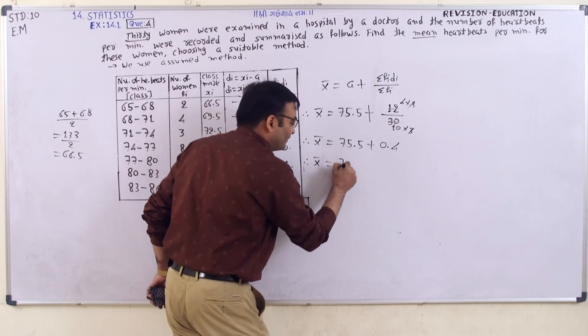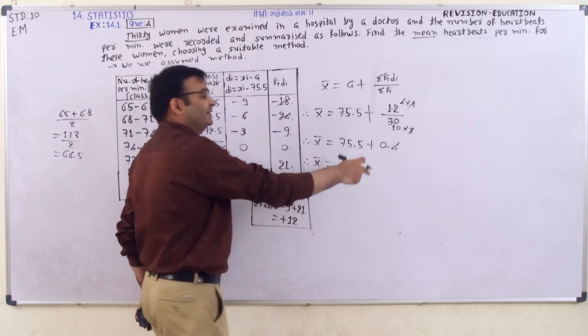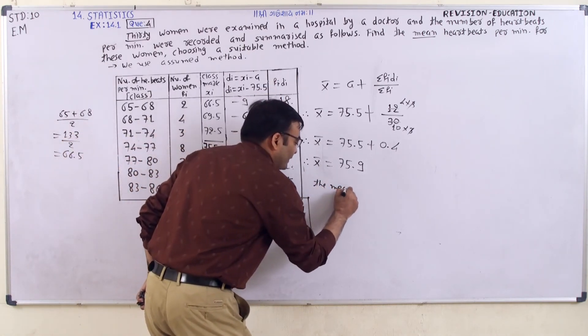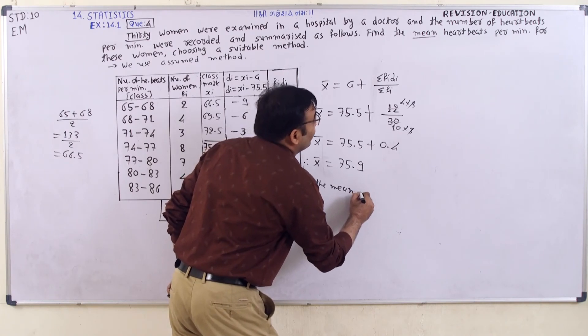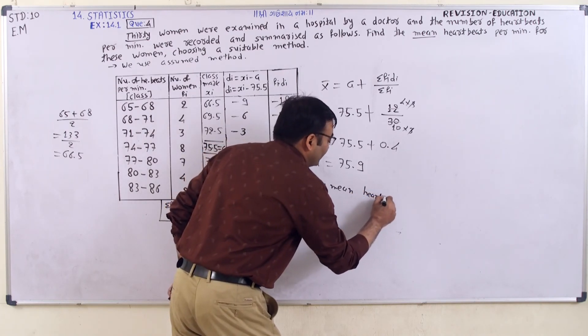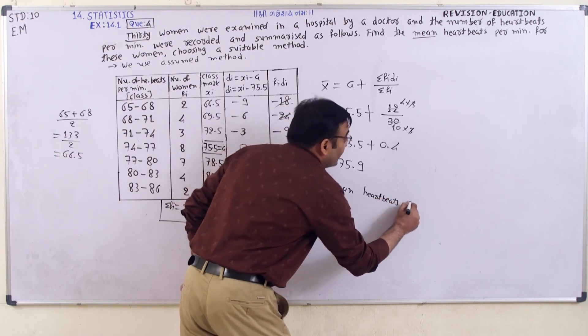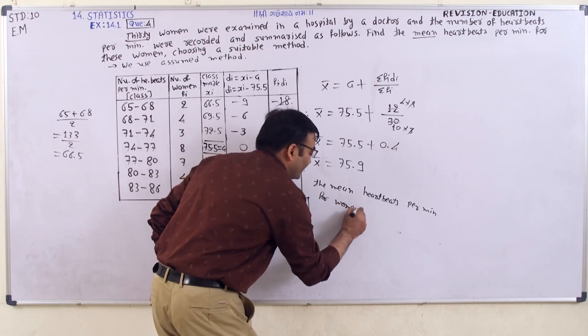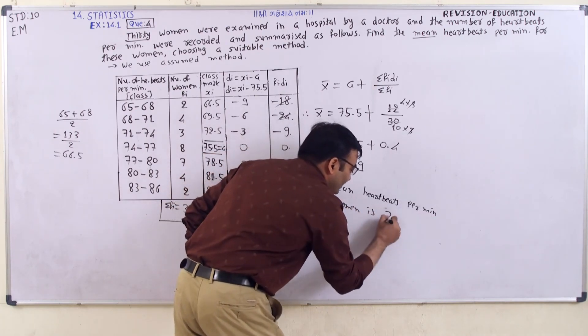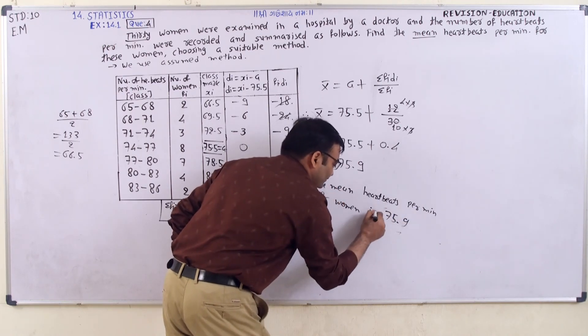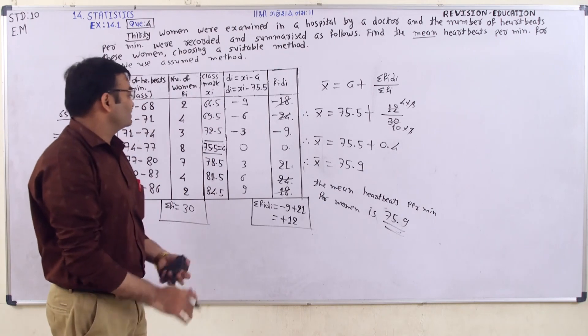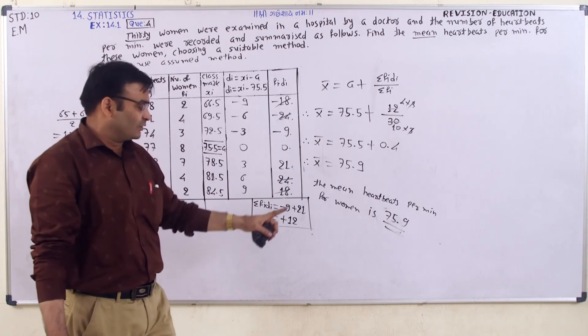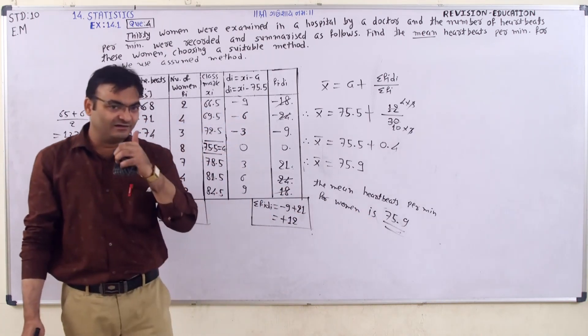So x bar is equal, the addition of these two are 75.9. We write the mean of heartbeats per minute for these women is 75.9. This is our answer. You can use any method here, you can get the answer 75.9. Thank you.